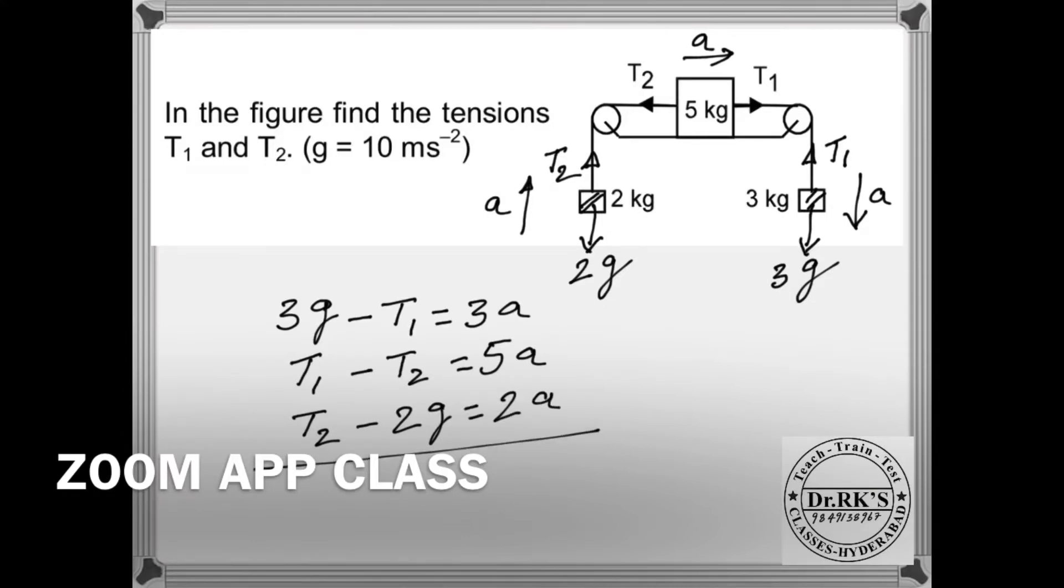So by adding all this, tension gets cancelled, you can find the acceleration. Once you know the acceleration, you substitute here, you will get T1 and also T2. If you substitute here, you will get T1 and after that you can find out T2.